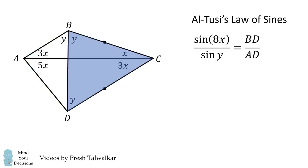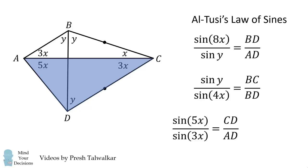We then consider this triangle, and we have sine of Y over the sine of 4X is equal to BC over BD. We finally consider this triangle, and we have sine of 5X over the sine of 3X is equal to CD over AD.